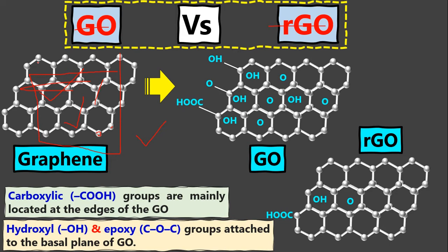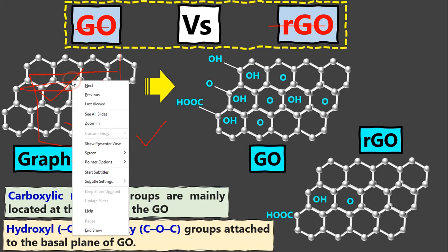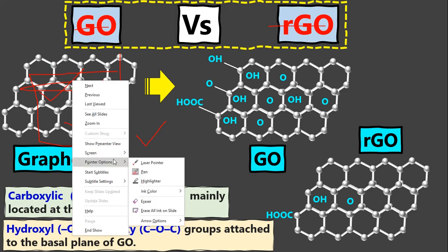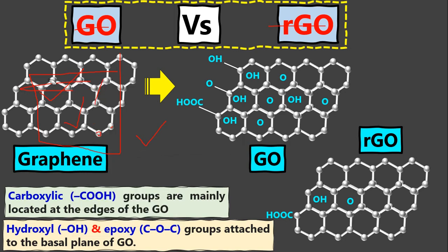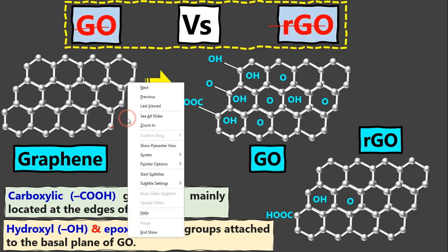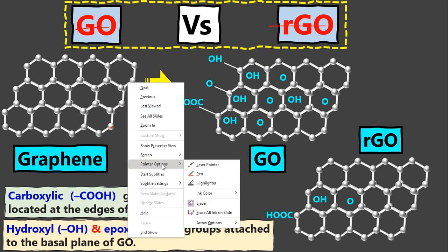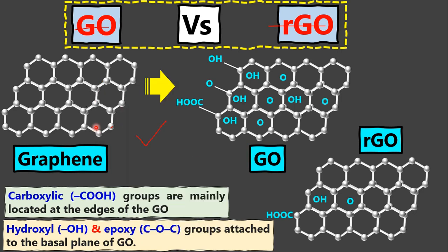Let's suppose we have graphene here. This is basically graphene, and this graphene has nothing attached to it — no functional group is attached here.